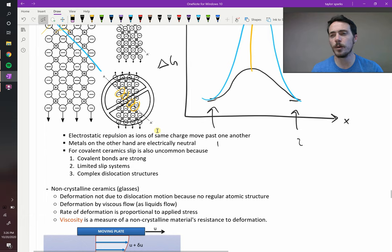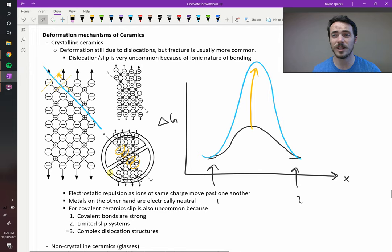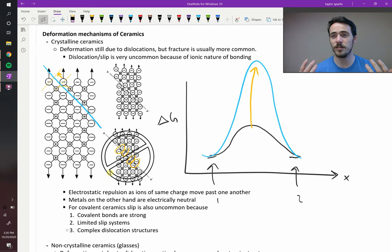So again, you don't expect much dislocation motion. Covalent bonds are really strong. You don't have good slip systems. And there's these really nasty dislocation structures in the intermediate states. So if you don't get dislocation motion, you don't really get much ductility. You don't get plastic deformation, which is what we observe. Ceramics tend to not really be able to deform.